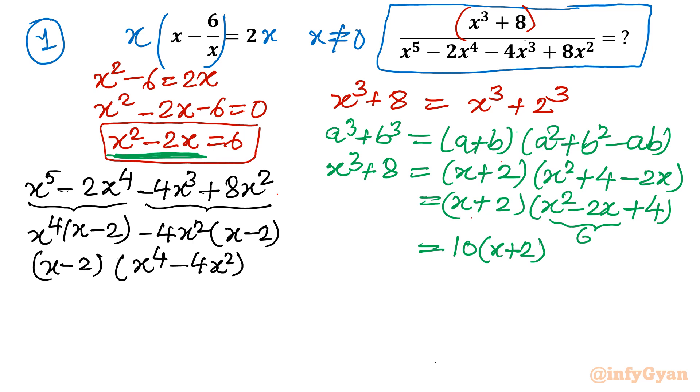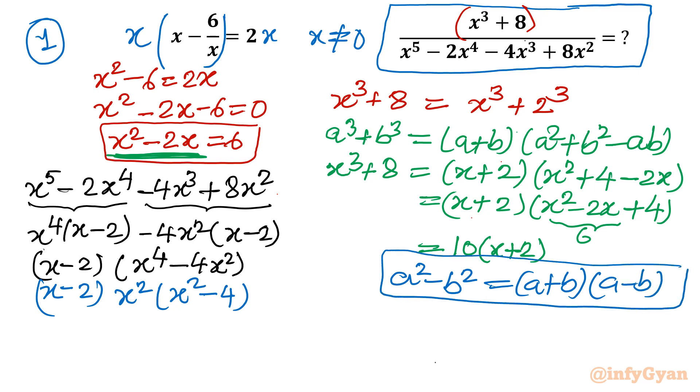Now you can see it is again a square minus b square form, difference of two squares. But we will take up x square common out. So I will write x minus 2, x square, x square minus 4 will be there. Now I will apply a square minus b square formula which is a plus b and a minus b. It is in product form a plus b times a minus b. So here I can write x minus 2, x square and then I will write x plus 2, 4 is 2 square. So x plus 2 times x minus 2.